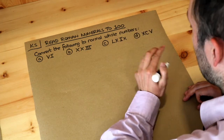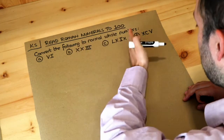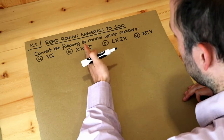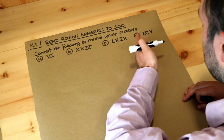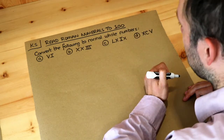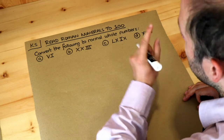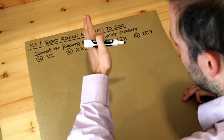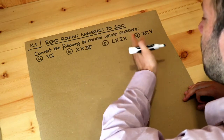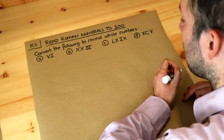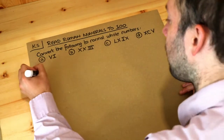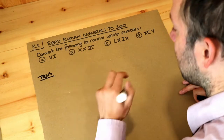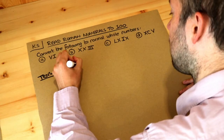Just like we have a tens digit and then a units digit, the Romans had a similar system. They had some symbols to represent the tens digit and then some symbols to represent the units digit. The difference with the Roman system and our system is they might have used multiple letters to represent the tens digit and multiple letters to represent the units digit. So let me write down the different tens letters and units letters.